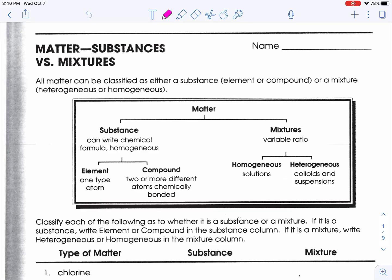Welcome to the worksheet Matter: Substances versus Mixtures. This worksheet has a diagram in the front reminding us that matter can be broken up into either substances, which we can write chemical formulas for (homogeneous means the same throughout), and mixtures, which have a variable ratio, meaning there's no formula.